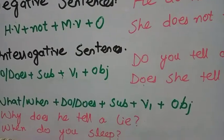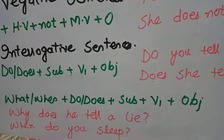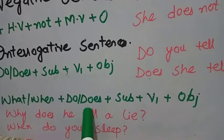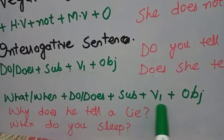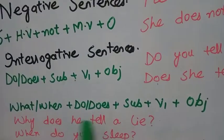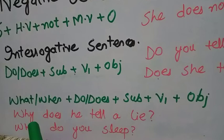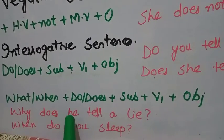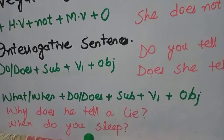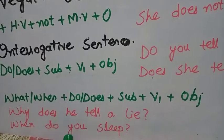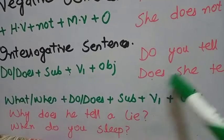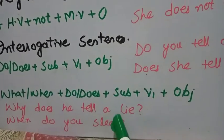For WH-questions — questions starting with words like 'what,' 'when,' 'why' — the structure is: WH-word + Do/Does + Subject + V1 + Object. For example: 'Why does he tell a lie?' — Why + does + subject + main verb + object. Similarly: 'When do you sleep?' — When + do + subject + verb + object. All WH-questions follow the same structure.